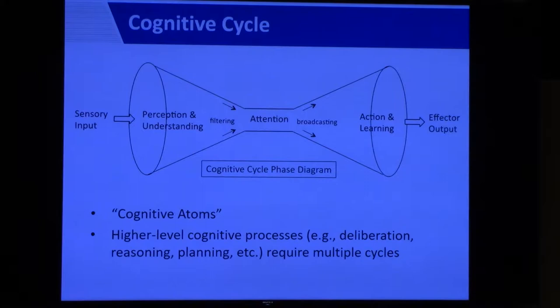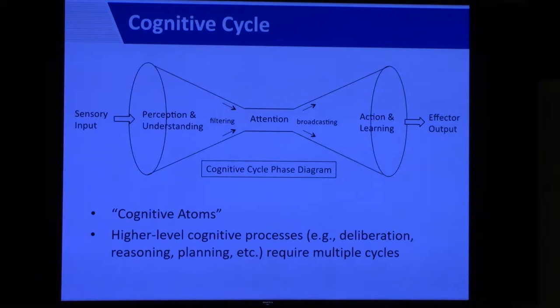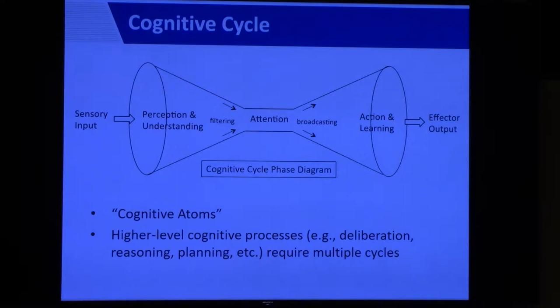The cognitive cycle is very important and can be broken down into three separate phases. The first, the perception and understanding phase, supports the agent's understanding of what's currently going on in both the internal and external environments. From that understanding, the attention phase filters out the most salient portions of the current situation — determining what is the most important thing. Once those salient portions are determined, they are broadcast, supporting the final phase: the action and learning phase. From the conscious broadcast, each long-term memory module can be updated, and the agent may choose to take an action affecting the environment.